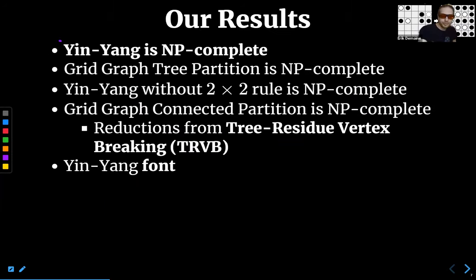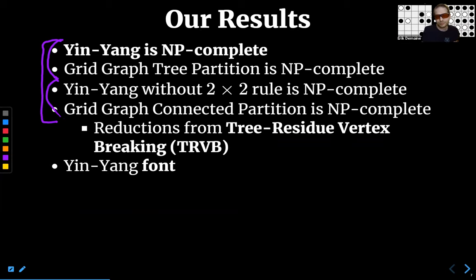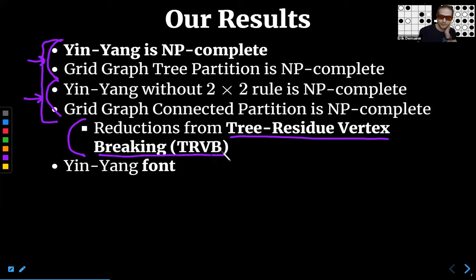We prove all of these problems are NP-complete. The first pair is yin-yang puzzles and grid graph tree partition. The second pair is yin-yang without the two-by-two rule and grid graph connected partition. This is a natural partitioning problem and a good warm-up for the proof — the first proof is actually more difficult than the second, so we do them in the other order. Both of our NP-hardness proofs are reductions from tree residue vertex breaking, introduced at a previous WADS. Even if you don't care about these specific problems, this is a useful reduction tool for your own NP-hardness proofs.